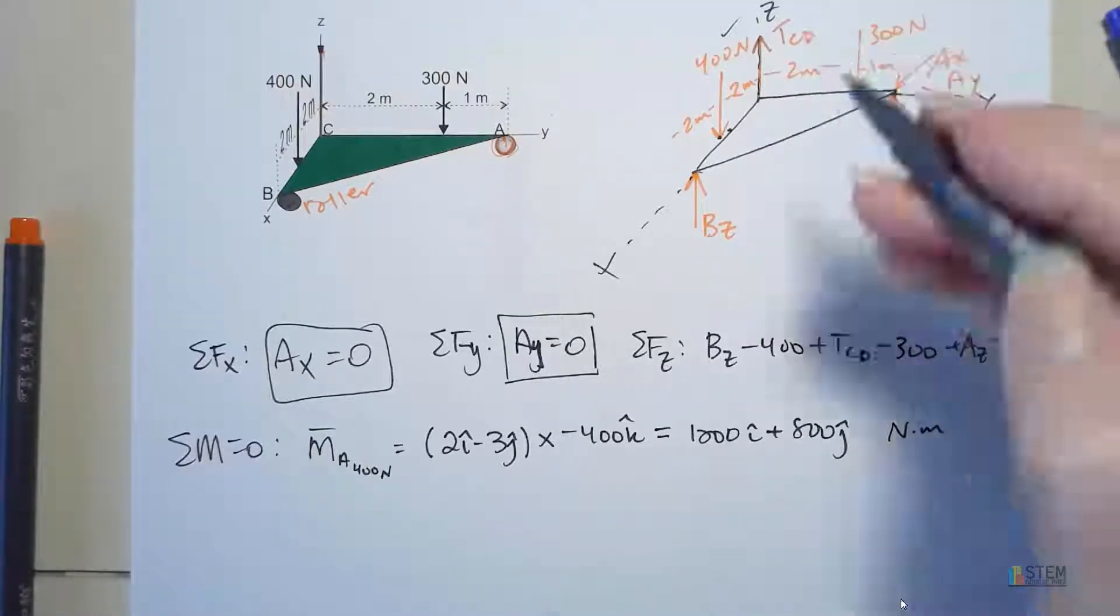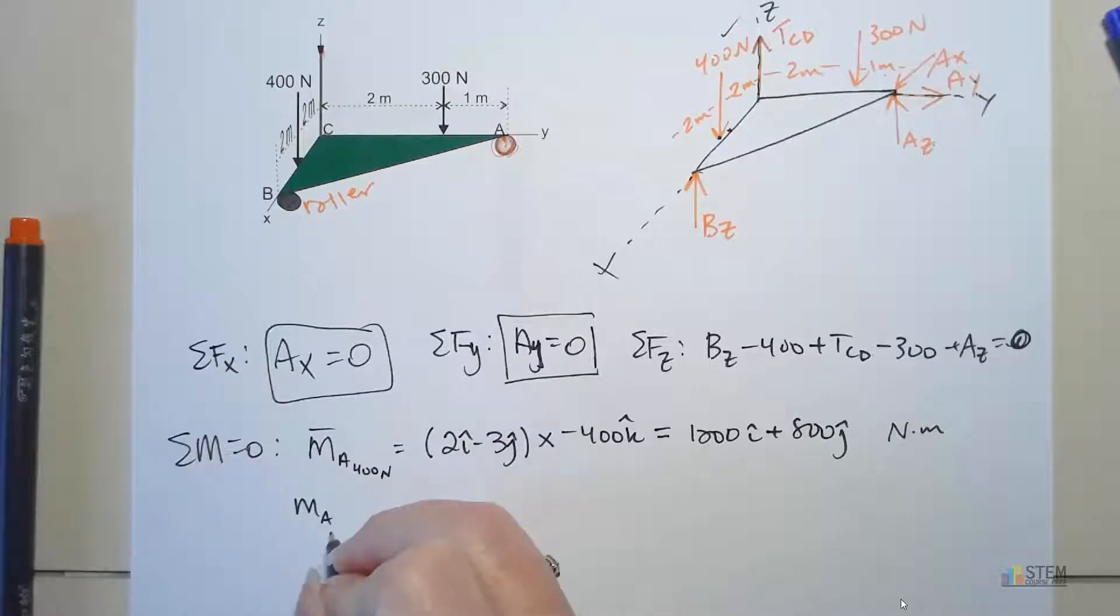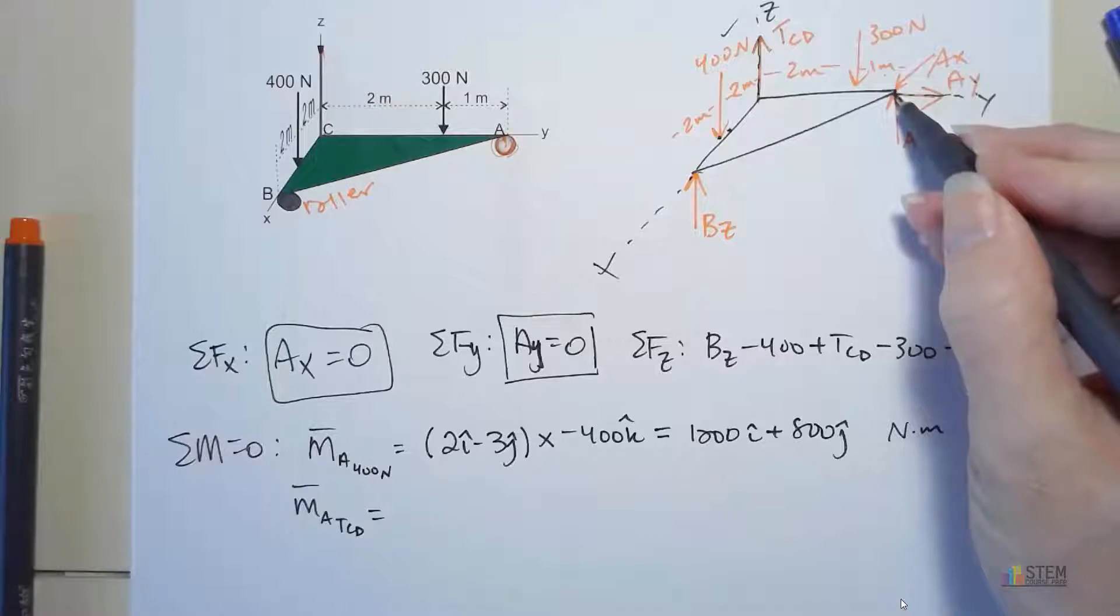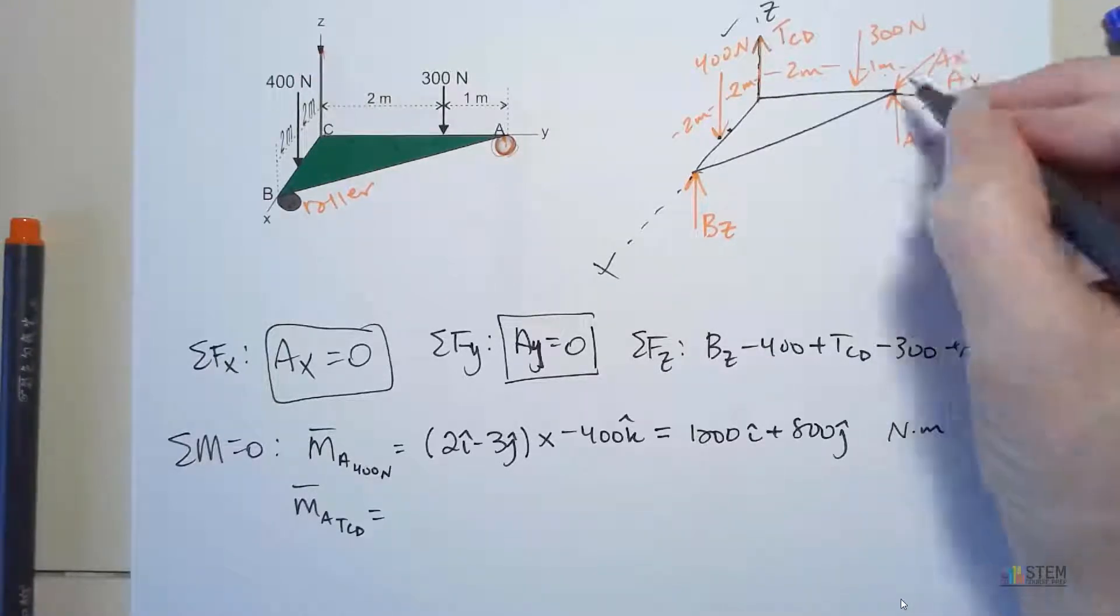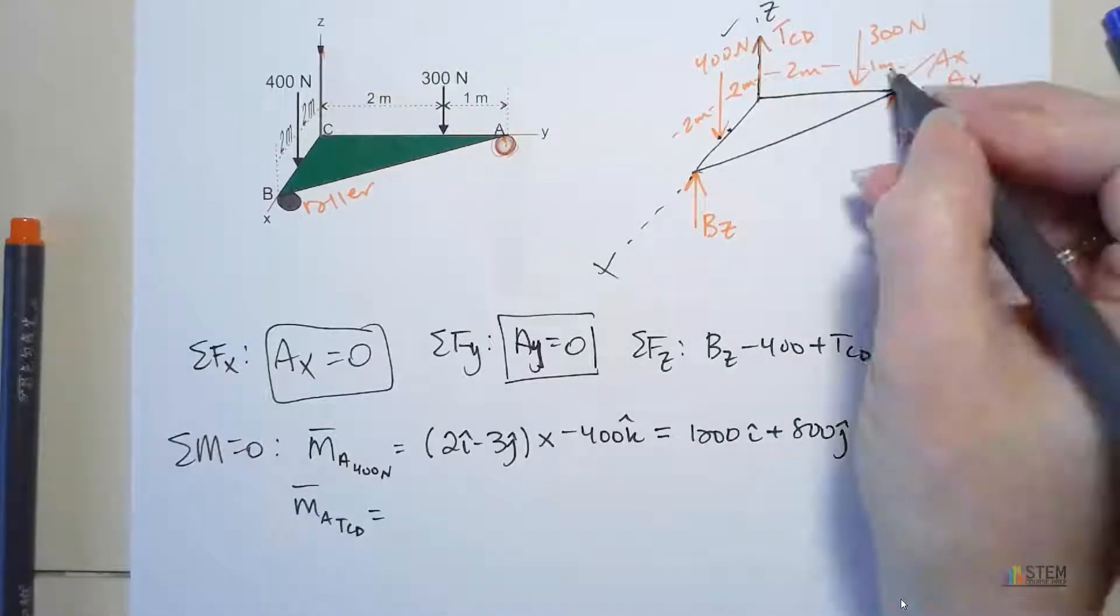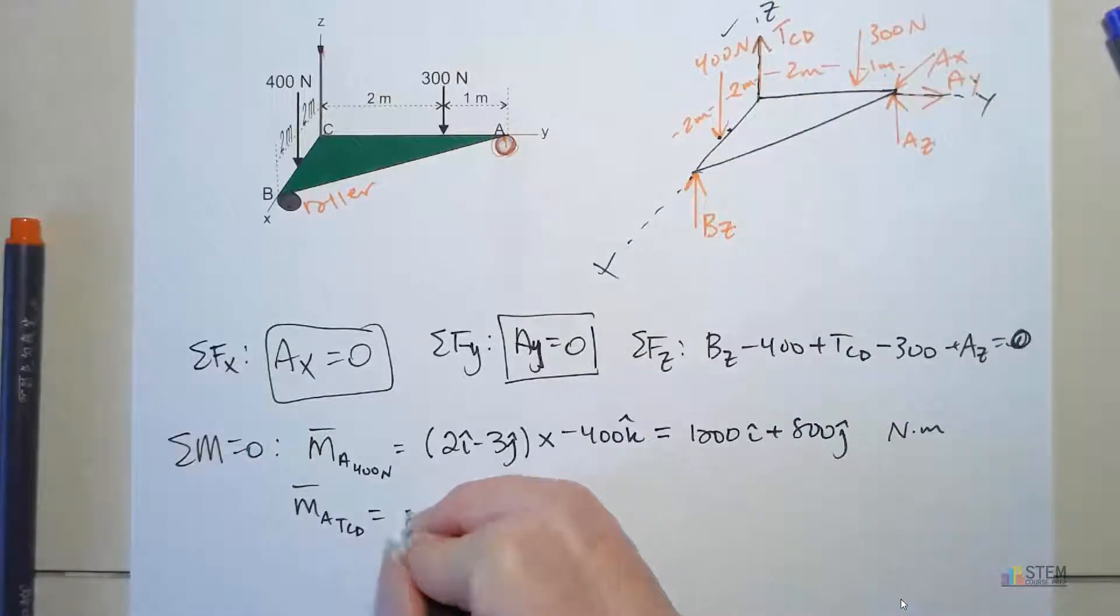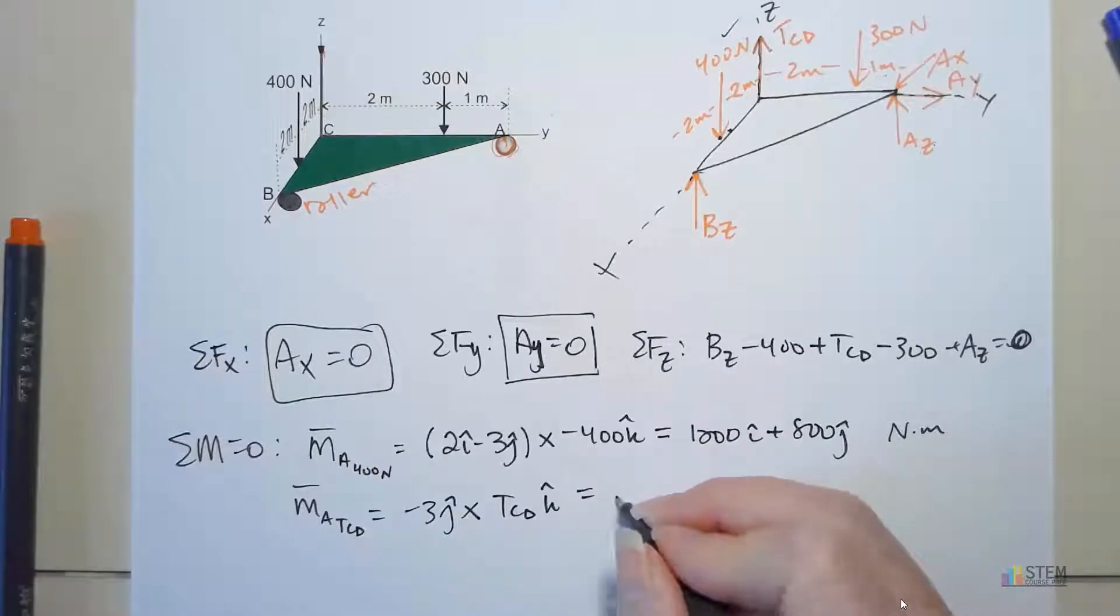We took care of this one. Now let's look at the tension, still about point A. This one, our position vector is easier. We just want to go from A over to here. That's just going to be in the Y direction, negative 3J. Cross it with TCDK. That gives you negative 3TCDI.